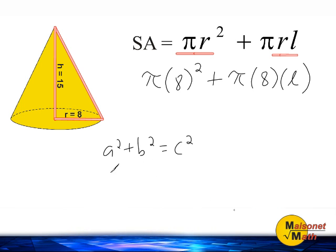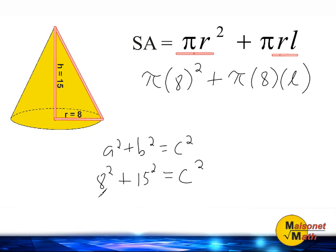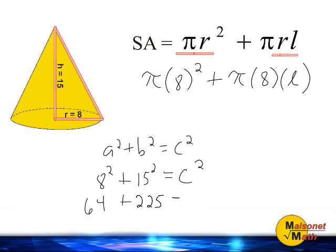So we are going to plug 8 into a and square that, plus we are going to plug 15 into b and square that, and that will be equal to whatever c is to the second power.